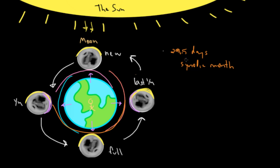But the problem is that if you have 12 months of 29 and a half days, this only works out to a year of 354 days. And we know from today that a year is 365 days.